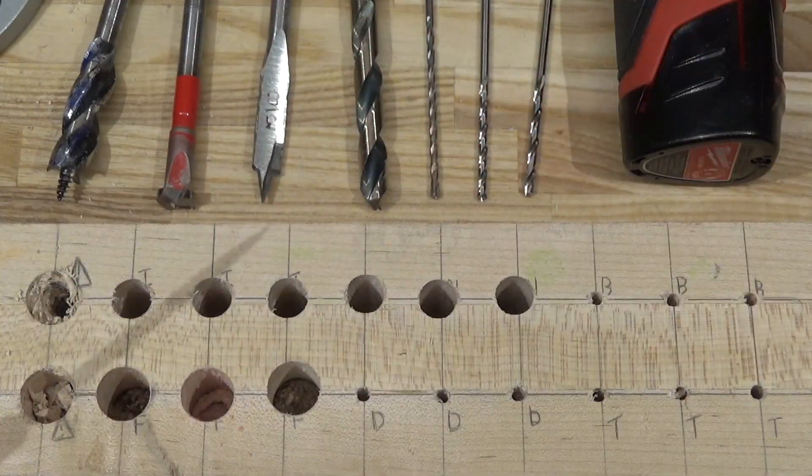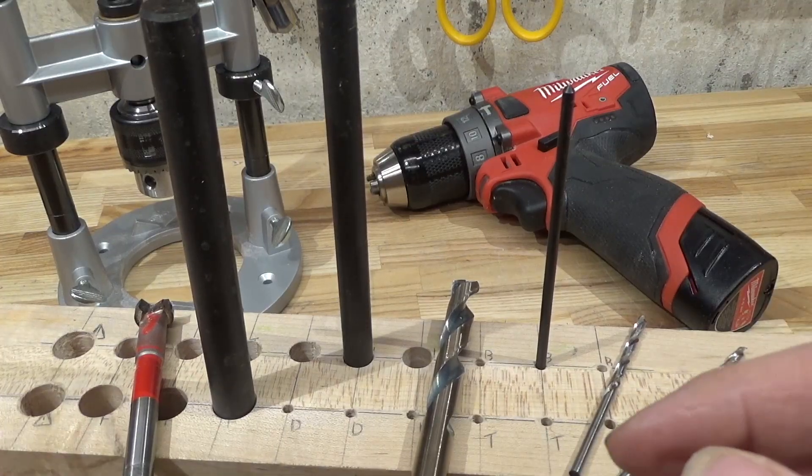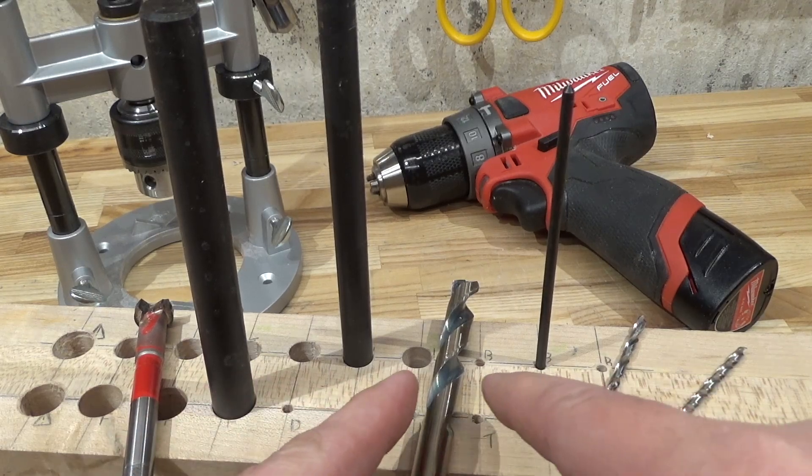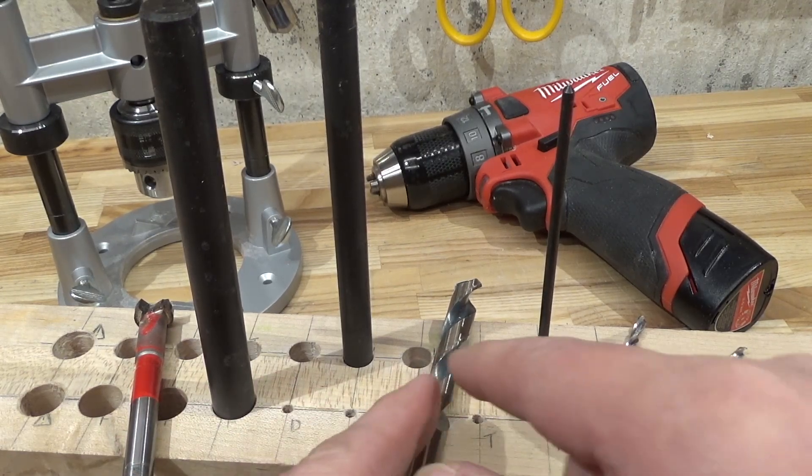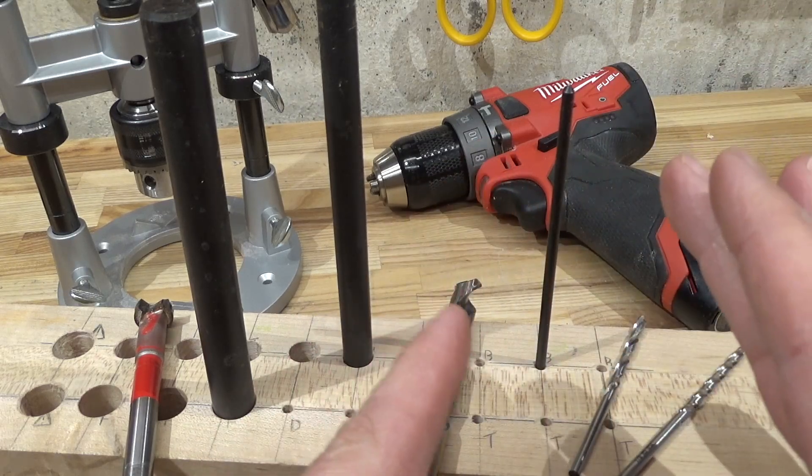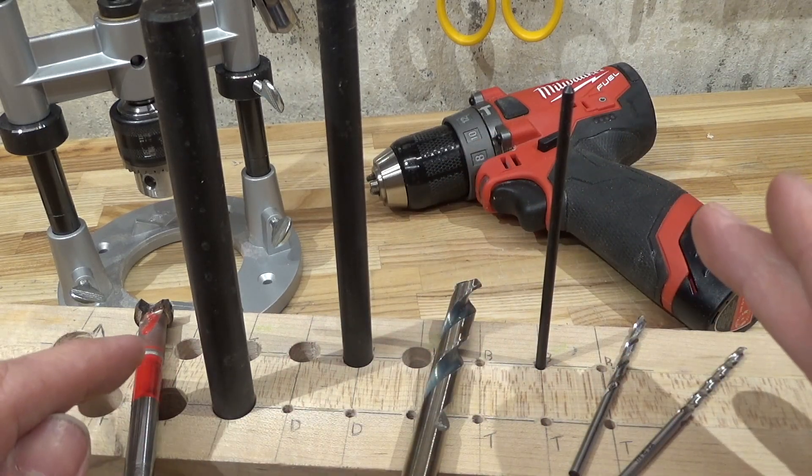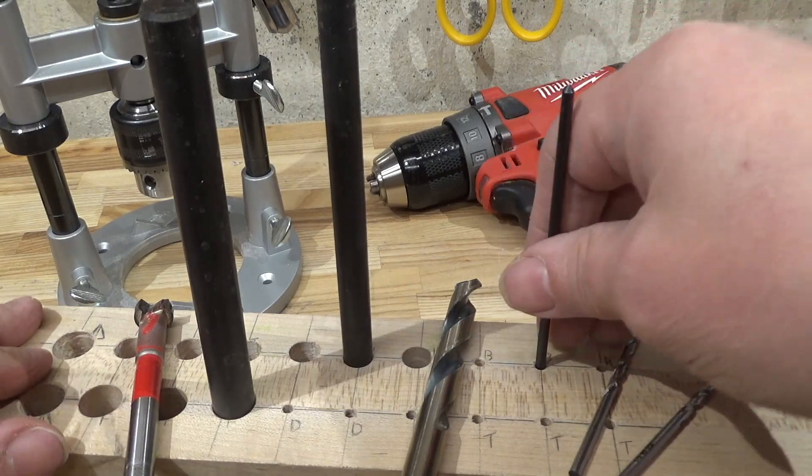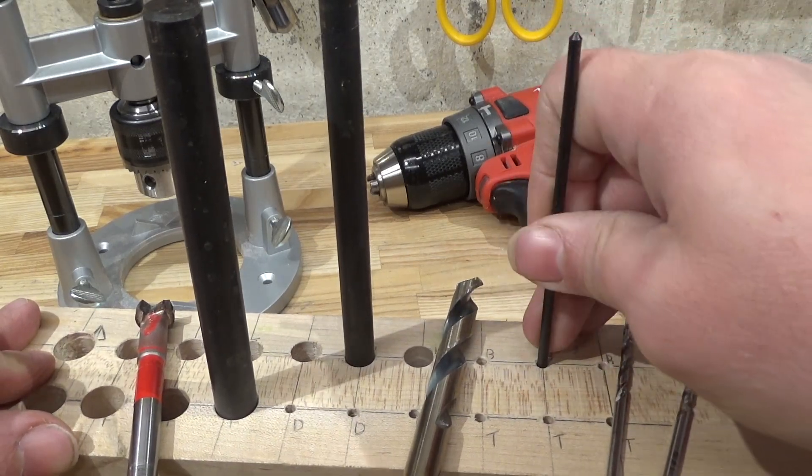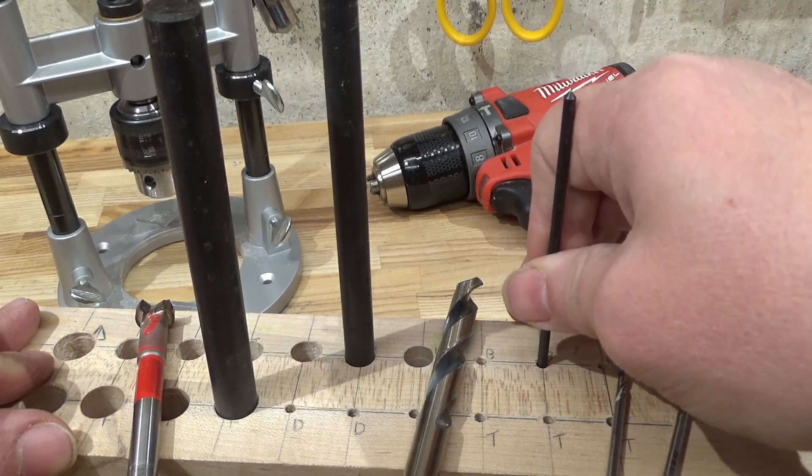Anyways, let me clean up the holes and give them a little bit of a chamfer, and I'll test for perpendicularity. Okay, on to the results. First thing to note is that the bits of constant diameter—the twist bits and the brad point bits—they made very clean holes, as well did the Freud.